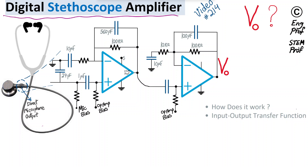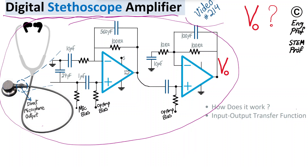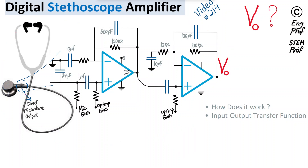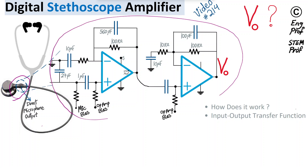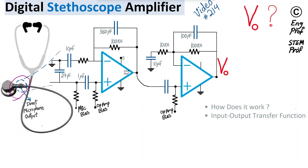A digital stethoscope amplifier is discussed in this example, which is the 214th video in the circuit analysis playlist. At the input we have the sensing device, or sensor, which is basically a microphone. After that, we have the signal conditioning and interfacing unit that takes care of amplifying — highlighted with a dual-stage op-amp design — and also signal filtering, noise cancellation, and noise reduction.